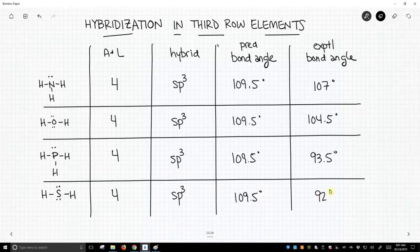Our predictions are not so good. There is a mismatch between our predictions and experimental values. So these are examples to show that be careful if you try to use hybridization on third row elements. The predictive ability of hybridization tends to fall apart.